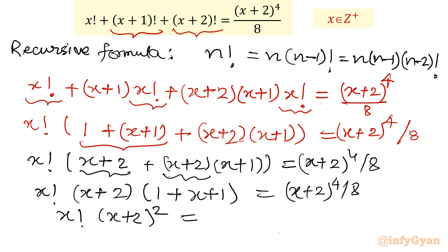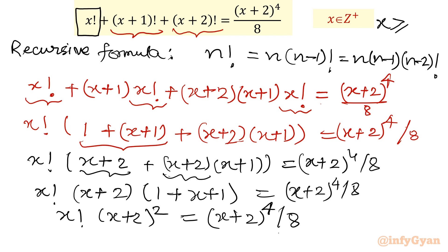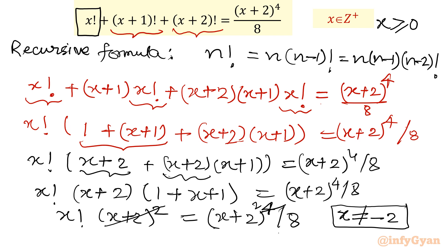We now have x factorial times (x+2)^2 equals (x+2)^4 divided by 8. Since x is greater than or equal to 0, and x cannot equal −2, we can cancel (x+2)^2 from both sides. This leaves us with: 8 times x factorial equals (x+2)^2.